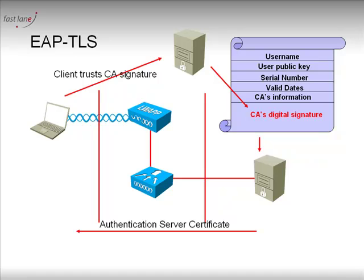Well, the best way is to have an external server — as you can see here on the top — that both the supplicants and the authentication server trust. Because there is this trust, the authentication server is first going to send its certificate to the certification authority at the top. And the certification authority is going to sign — that is to say to certify — that this key is genuinely sent by the authentication server.